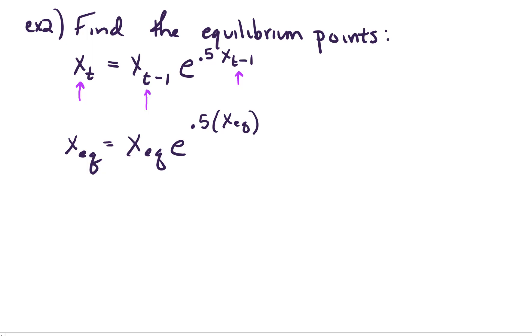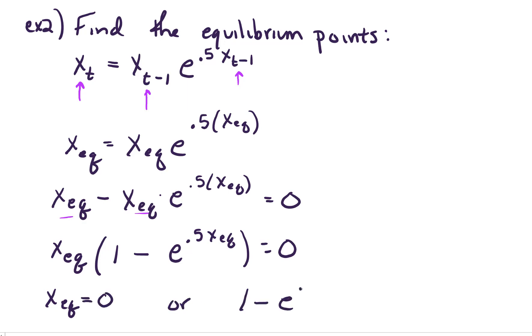Now this looks kind of complicated, and how in the world would we solve for x sub eq? But let's go step by step. So let's pull everybody over to one side. So on the left hand side I'll have x sub eq minus x sub eq times e to the 0.5 times x sub eq equals 0. Let's pull out a common factor. Pulling out x sub eq as a common factor we're left with 1 in the first term minus e to the 0.5 x sub eq in the second term. Setting each factor equal to 0 we get x sub eq equals 0 or 1 minus e to the 0.5 x sub eq equals 0.